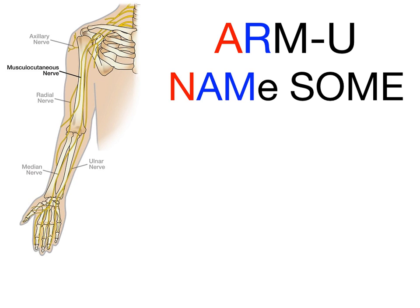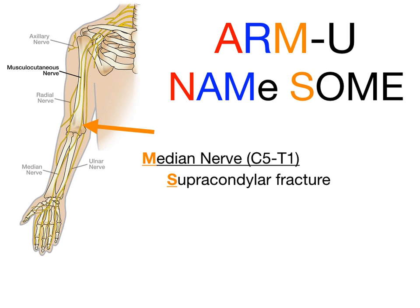The M in 'Arm University' is the median nerve, corresponding to the S in 'name some.' The median nerve comes from C5 to T1, and you injure it with a supracondylar fracture — 'supra' meaning just above the condylar region, right above where the medial and lateral epicondyles are on the humerus. The median nerve runs right over that area, so fracturing there injures it. M in 'Arm U' paired with S in 'name some': median nerve injured by supracondylar fracture.